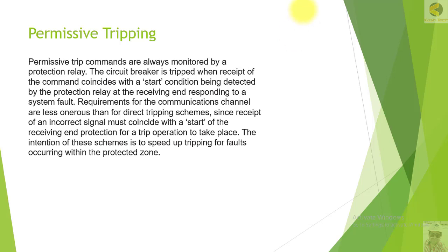Welcome friends. In this section, we will elaborate a little bit more on the permissive scheme, permissive trip commands, and permissive tripping. Permissive trip commands are always monitored by a protection relay. The circuit breaker is tripped when receipt of the command coincides with the start condition being detected by the protection relay at the receiving end.